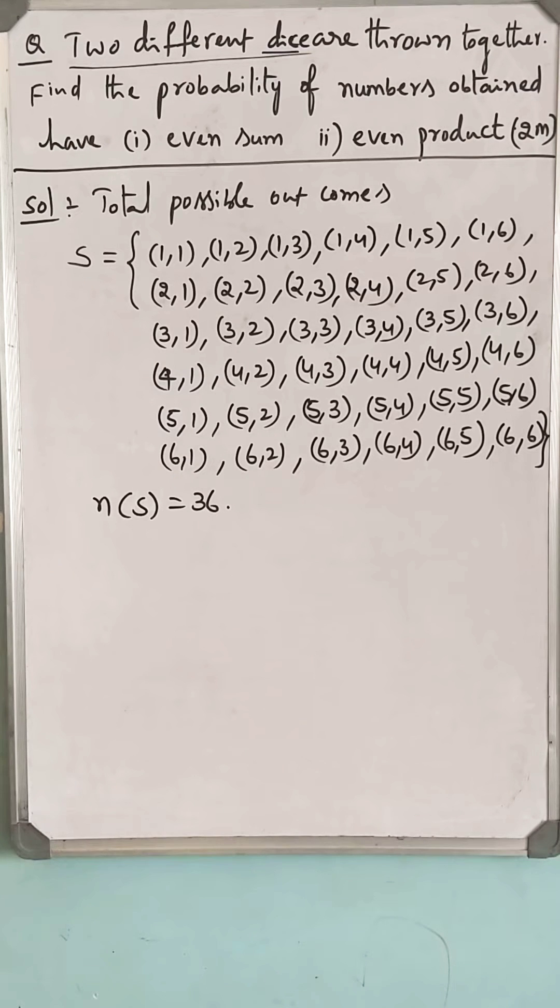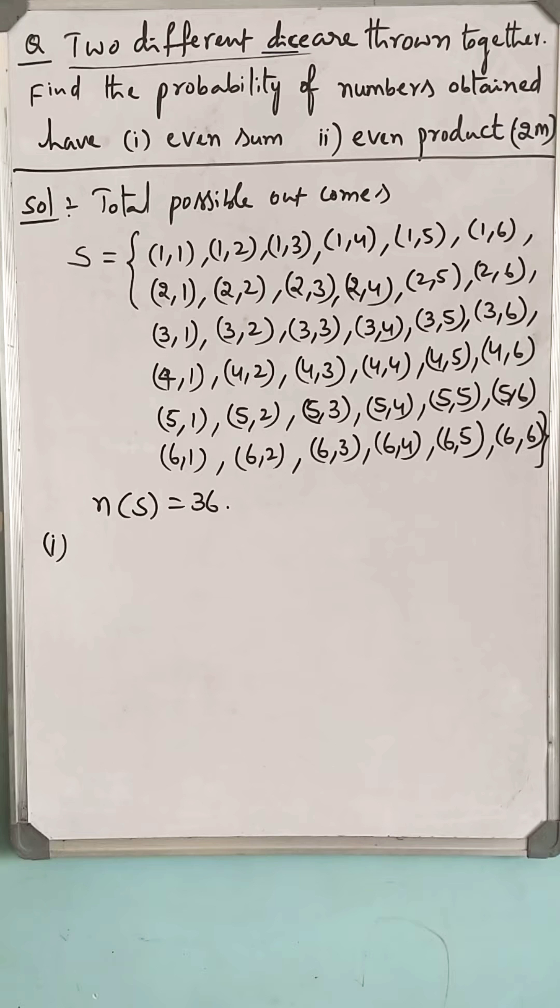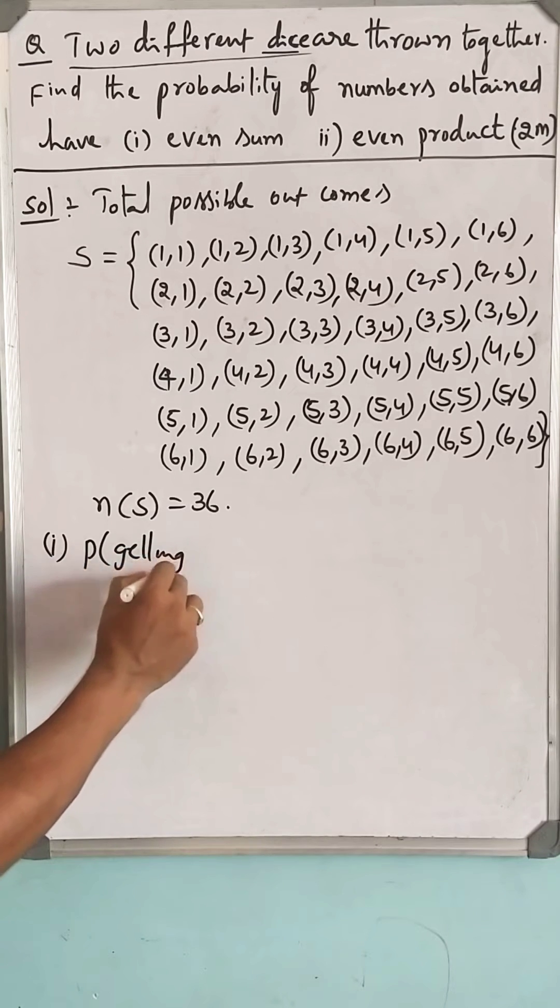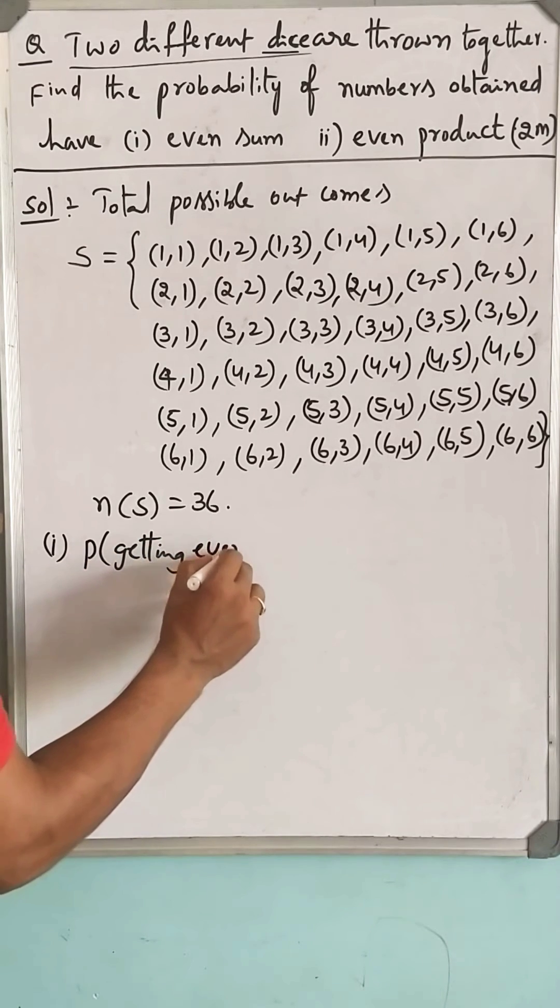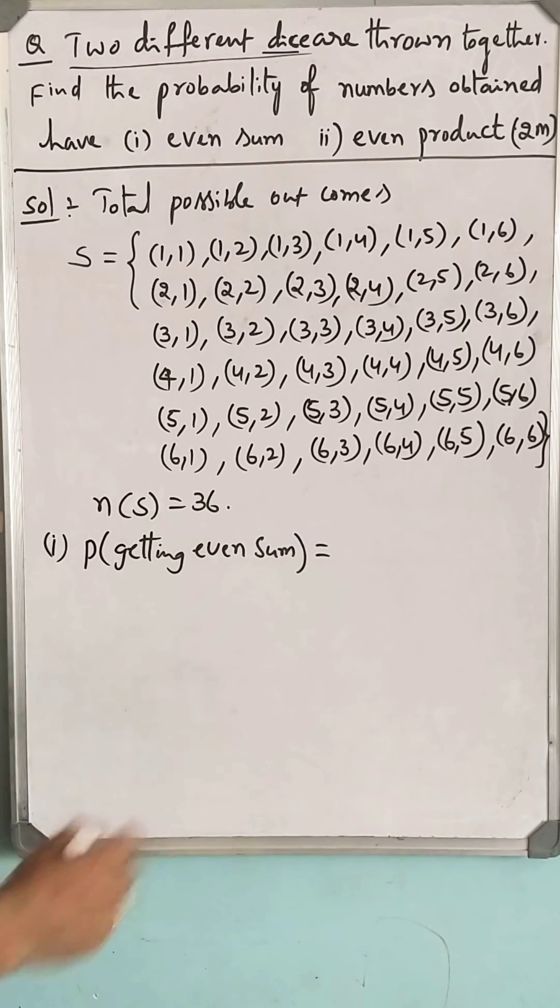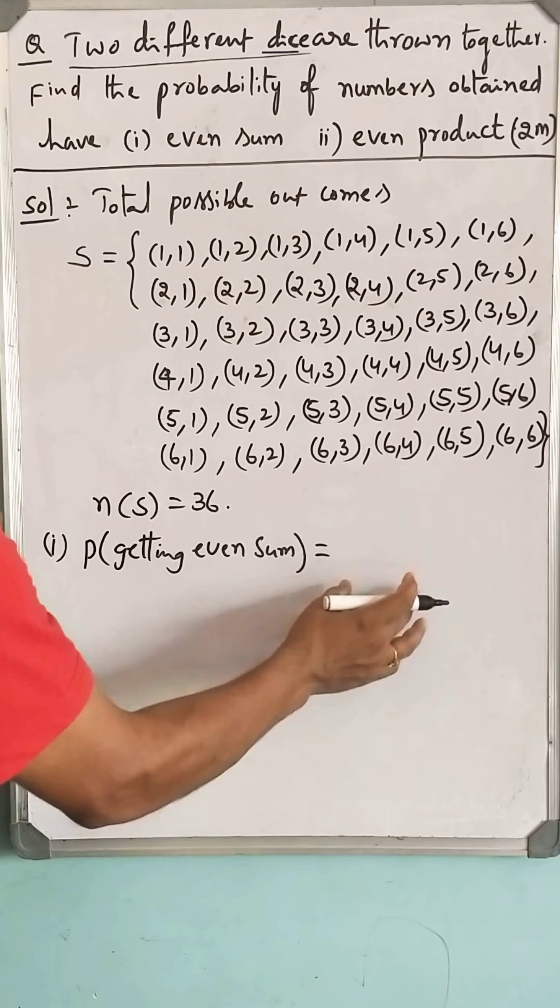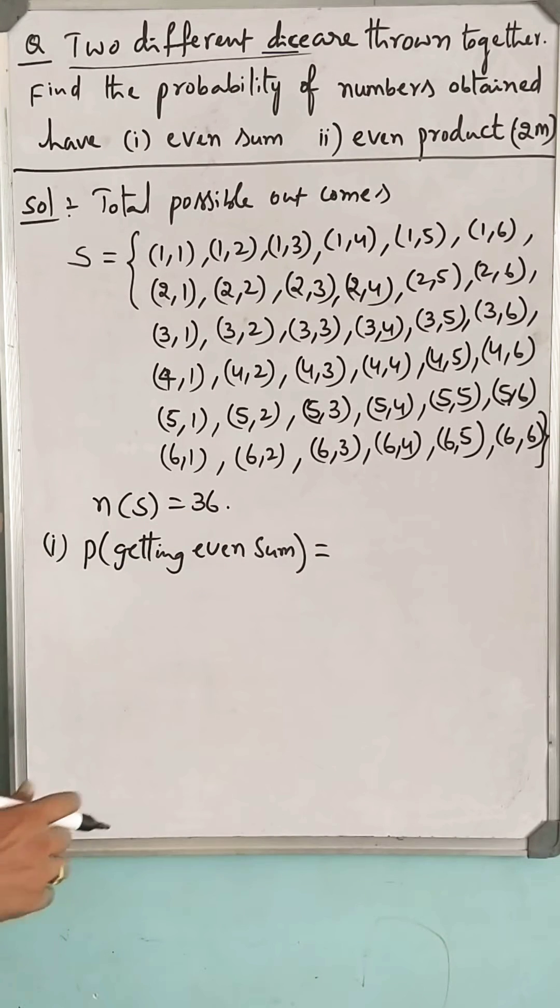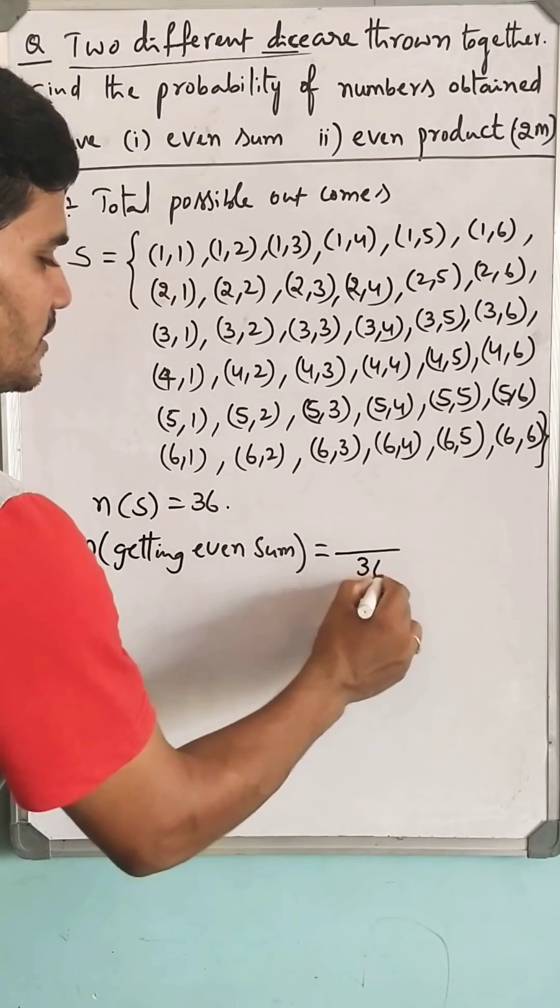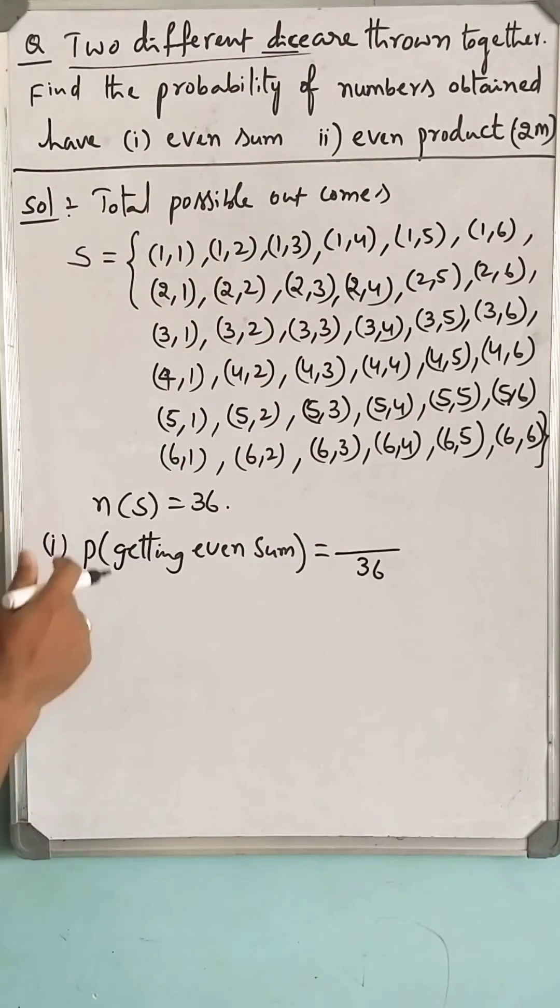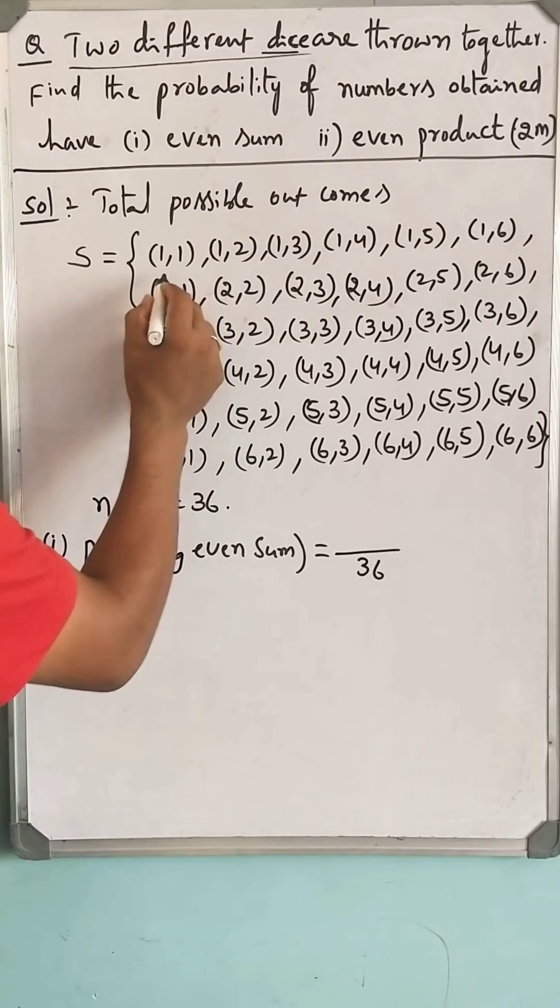Now we want probability of getting even sum. As you know, probability is defined as number of favorable outcomes over total number of outcomes. Total number of outcomes are 36. Here, getting even sum. Look at this ordered pair, even sum, where do we observe?